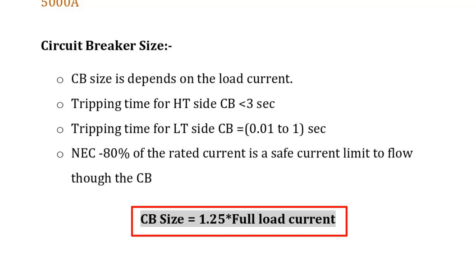There is one more reason why we are taking an extra 25% of the rated current — this is for future load. Suppose today my full load current in a circuit is 16 amperes. If I use a 16-ampere circuit breaker but later need to add more loads drawing approximately 3 amperes, the 16-ampere circuit breaker will trip again and again. That's why we are considering 25% extra for future load as well as for safety.